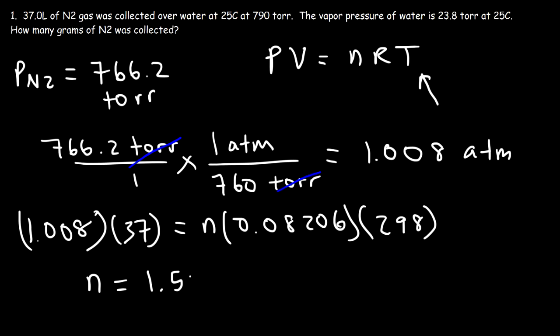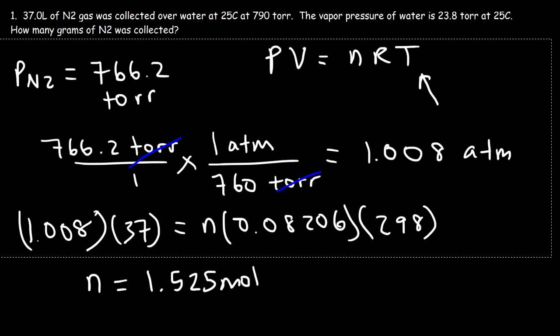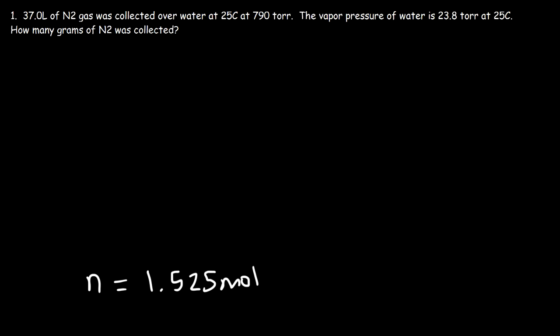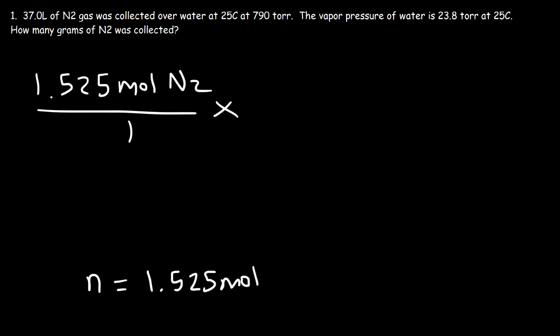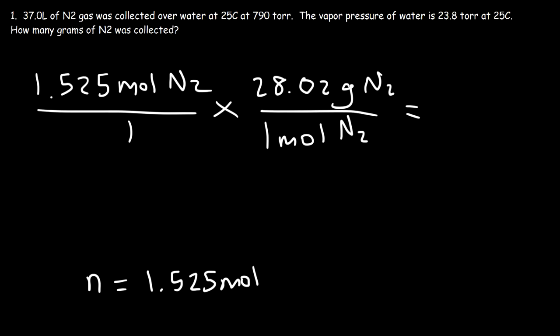That gives 1.525 moles of N2. Now we need to convert moles into grams. Nitrogen has an atomic mass of 14.01, so we multiply by 2 to get the molar mass of N2, which is 28.02 g/mol. So the mass is 1.525 × 28.02 = 42.7 grams of nitrogen gas.